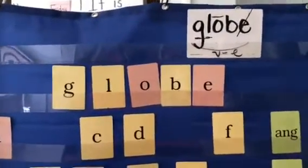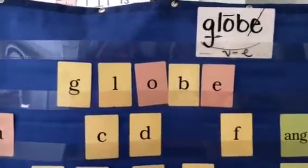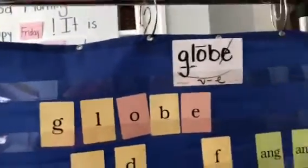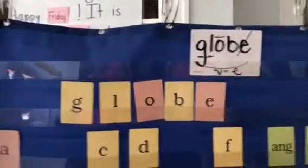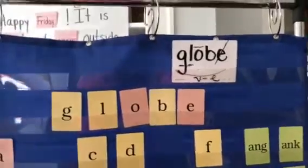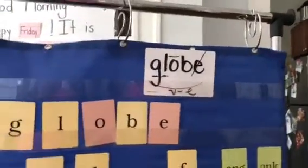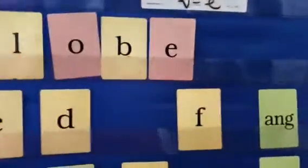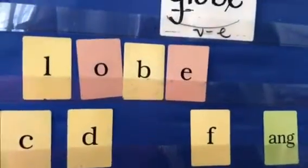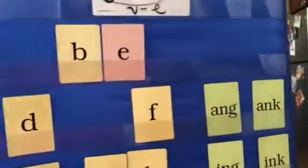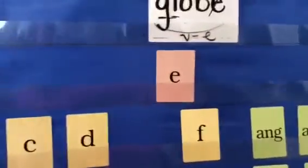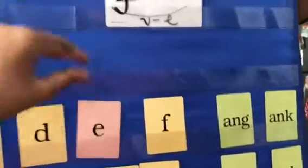Now let's think of a sentence for globe. My sentence is: I hope I get to travel across the whole globe. What's your sentence? All right, let's go ahead and spell this one away. G-L-O-B-E spelled globe.